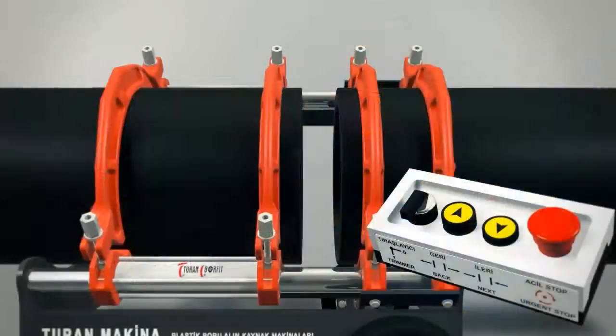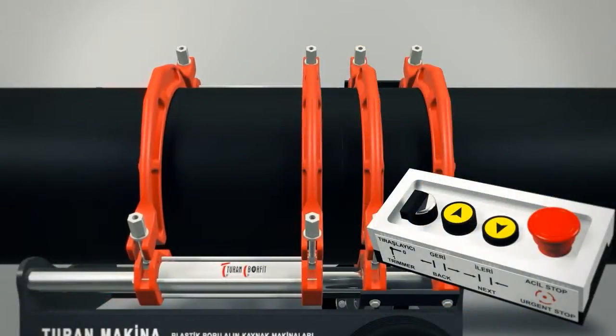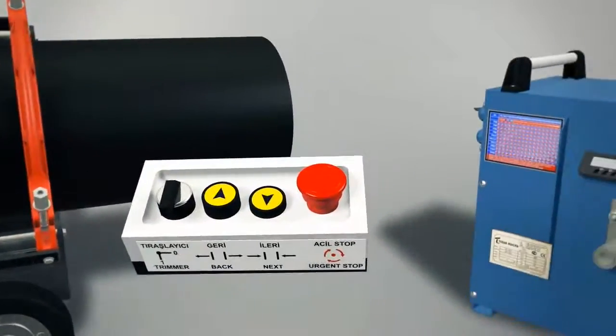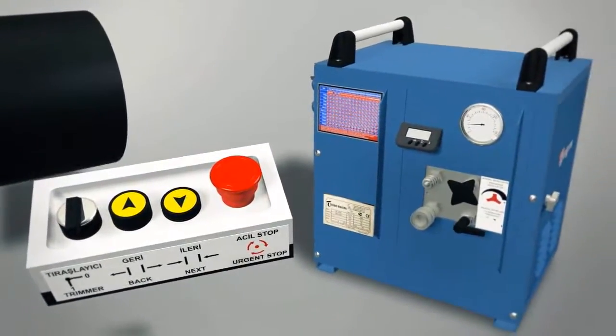When pipes are butt to butt, you will see total pressure by adding welding pressure to walking pressure. For example, if walking pressure is 20 bars and welding pressure is 28 bars, total pressure should be 48 bars.